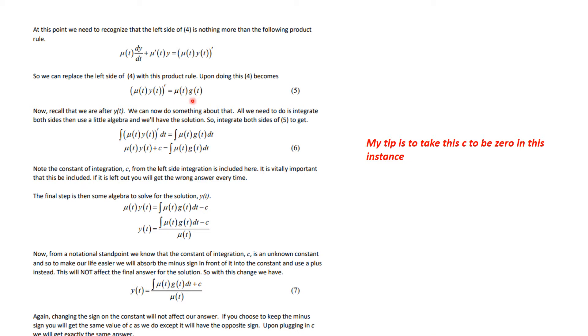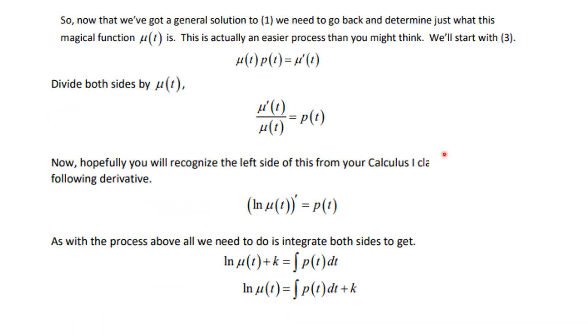So I integrate both sides, and I get this, and then I can solve for y of t by dividing all the way through by mu of t. Now, you don't want to memorize this at all, but this shows you the mechanics that we went through. And my tip is you can be kind of fast and loose with some of these constants. You can take the c to be zero in this instance.